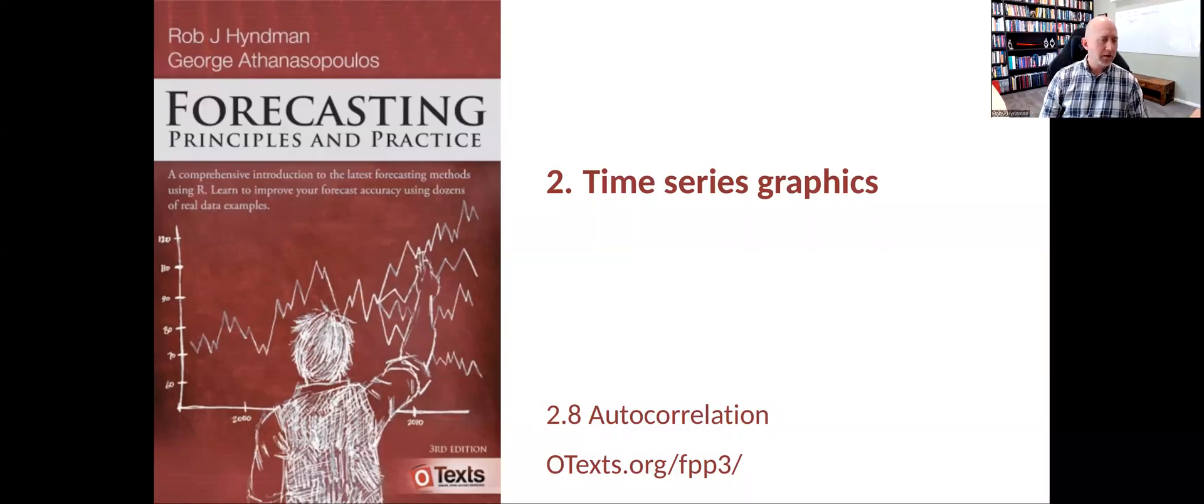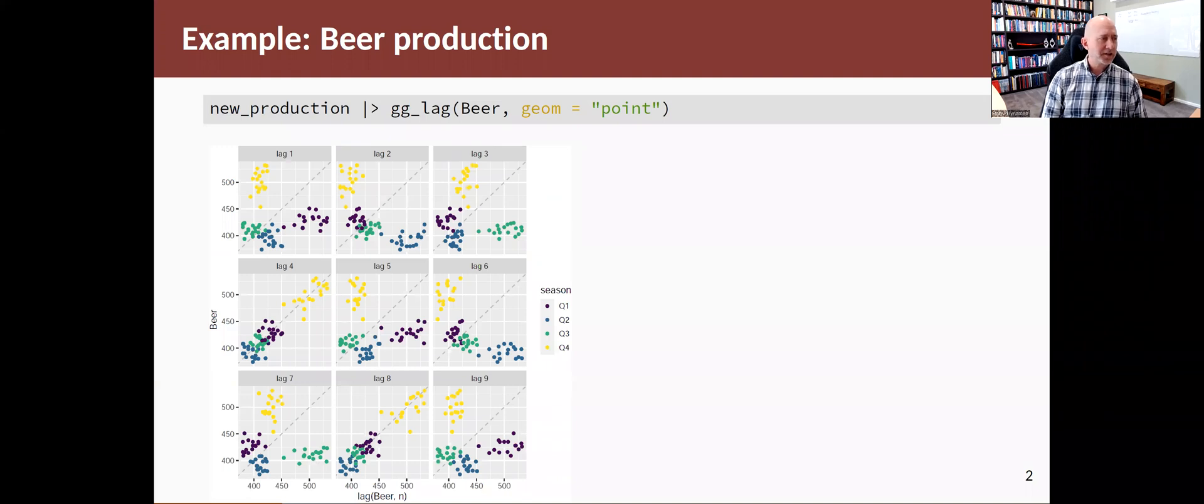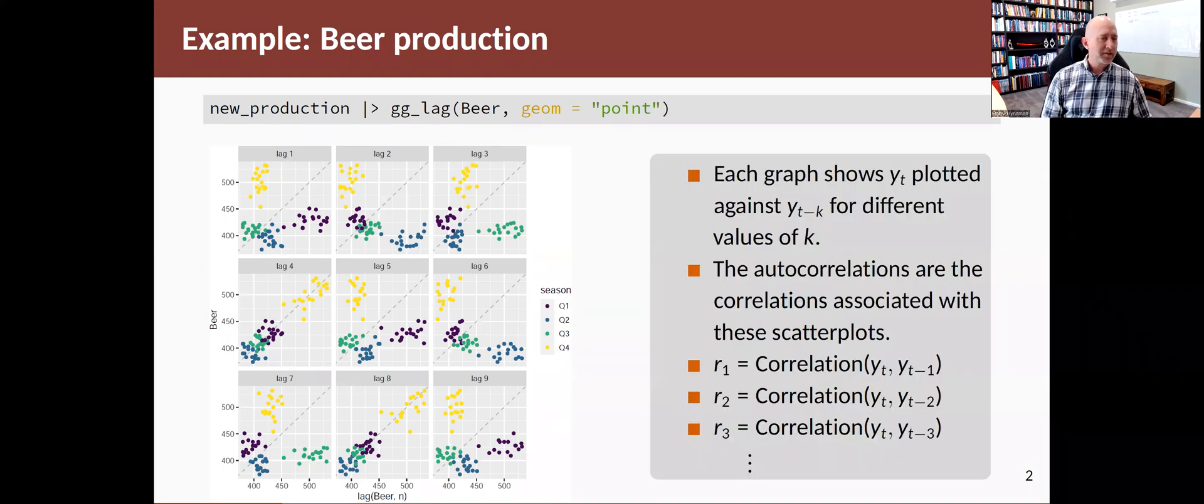Autocorrelation is one of the key features of a time series, one of the key things we use when we try to understand a time series. Let's introduce it by starting with the lag plots that we talked about in the last section. There we were looking at plots like this, where we see observations of a time series plotted against lagged values of that series. In this case, Y is the time series, Y is beer production, quarterly beer production in Australia, and we're showing Yt against Yt minus K for different values of K.